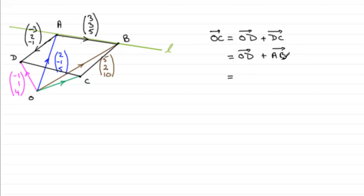So all we need to do now is just fill in our vectors. We know O to D. O to D is the vector minus 1, 1, 4. Okay. And A to B, we got that earlier, 3, 3, 5. And if we add these two vectors together, then you're going to get 2, 4, 9. Or you could write it, it's up to you, not as a column vector, but 2i plus 4j plus 9k. All right. So that's the position vector of C, O to C.